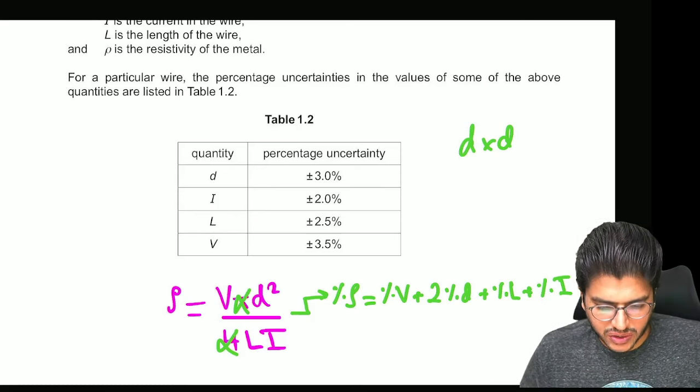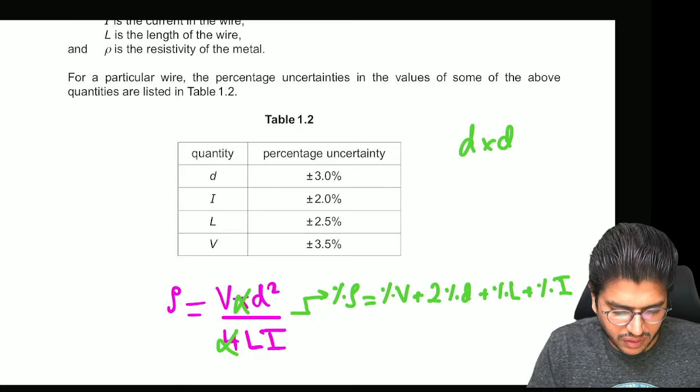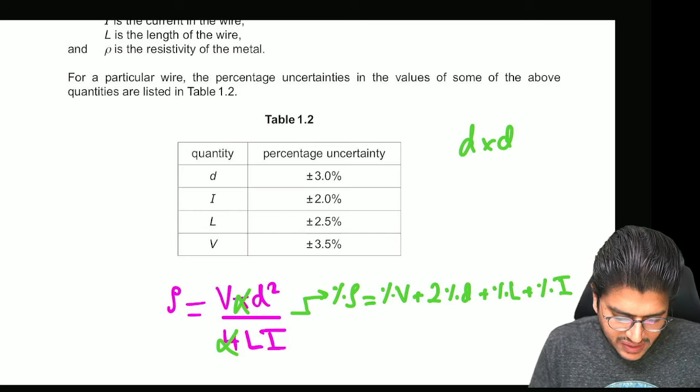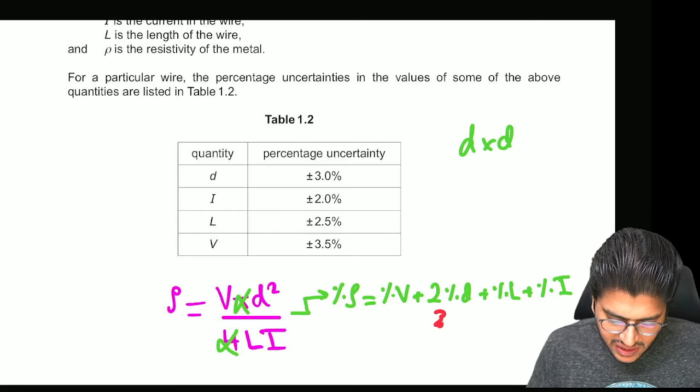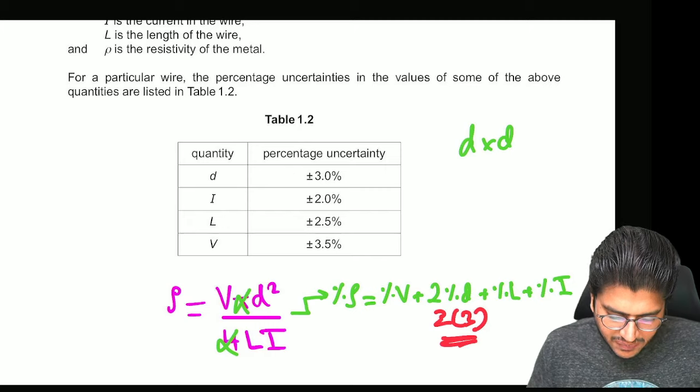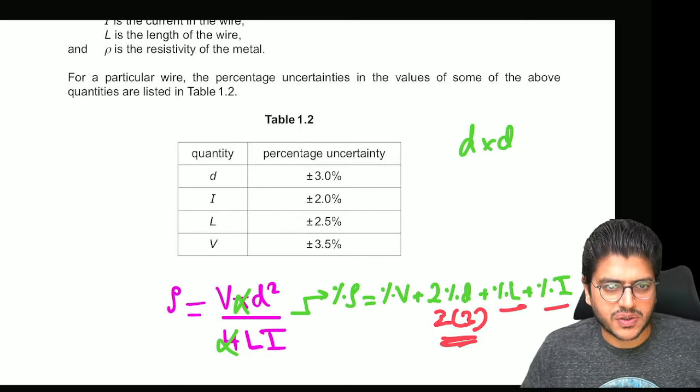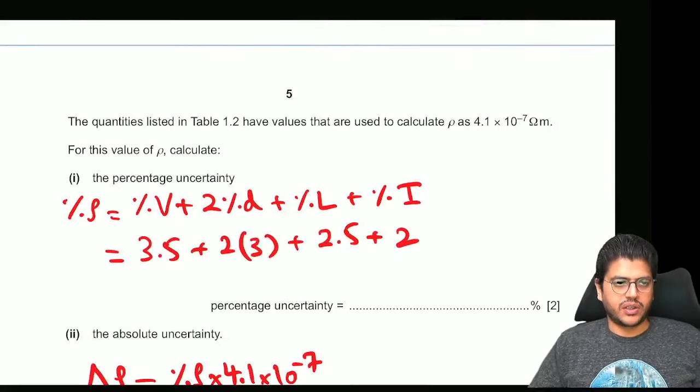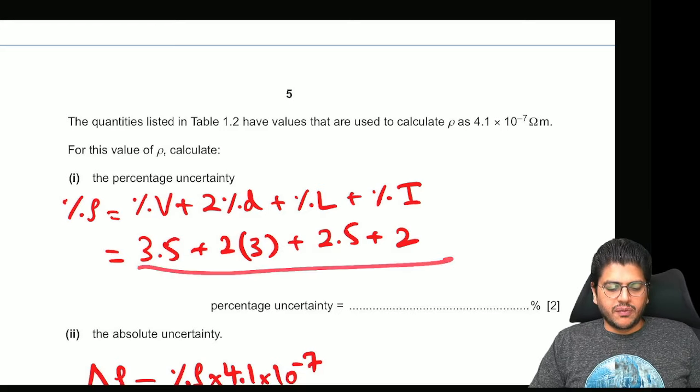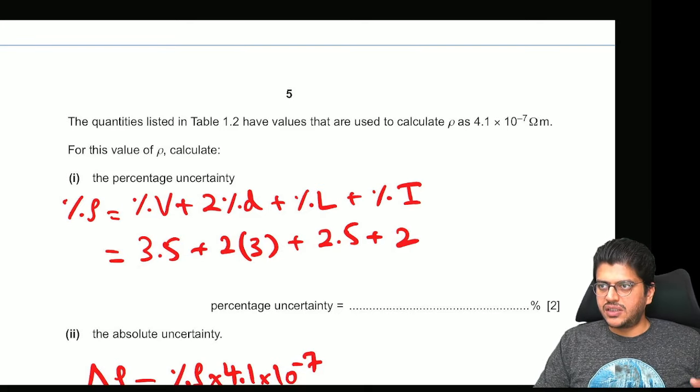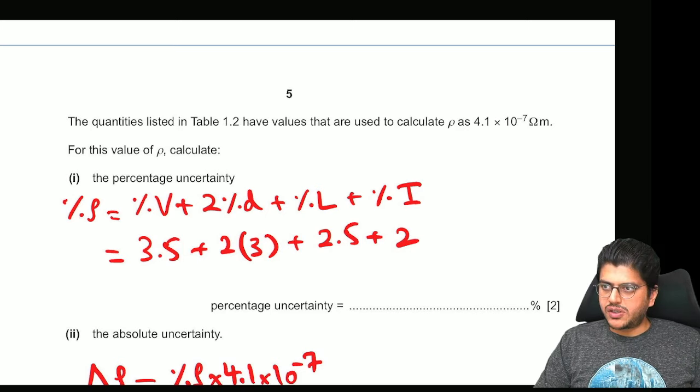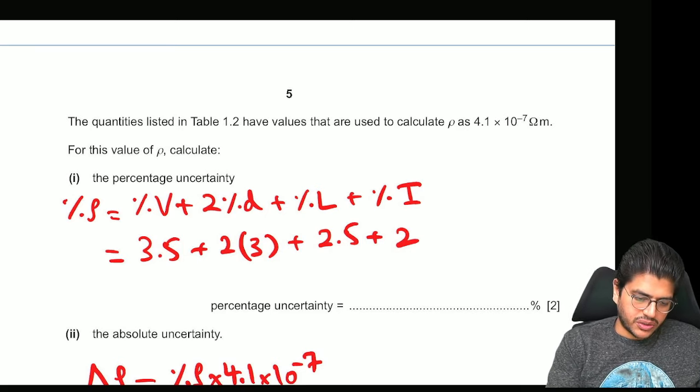This is your expression and now they've given you the values over here. If you can see they've given you percentage V, percentage D. So percentage D is basically 2 times 3 and then plus percentage L plus percentage I. And if you go here I've already done it for you.